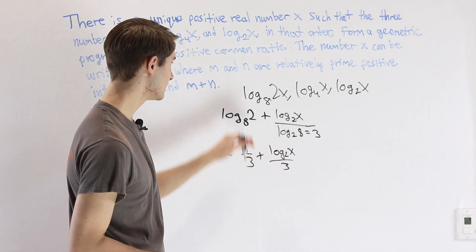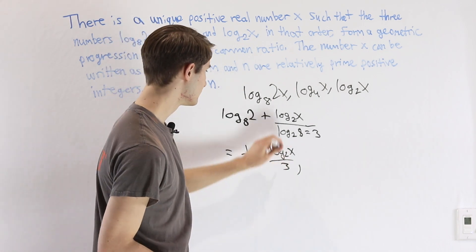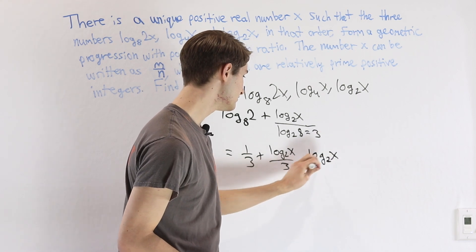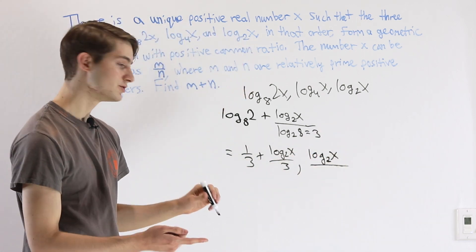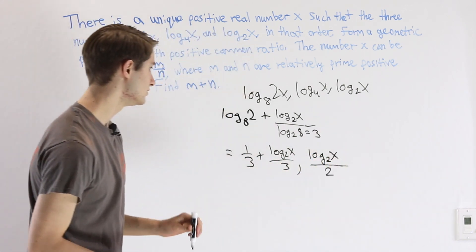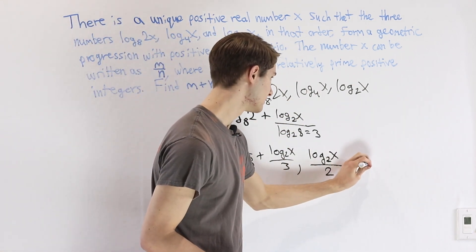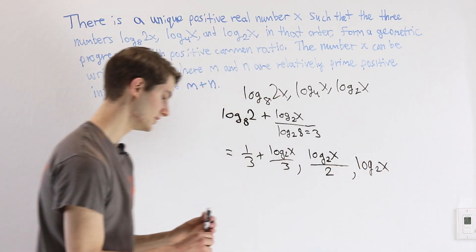So we have this as our first term. For the second term, log base 4 of x, we can again write that as log base 2 of x over log base 2 of 4, that's going to be 2, since 2 squared is going to give us that 4. And then we have our final term, log base 2 of x, still the same.